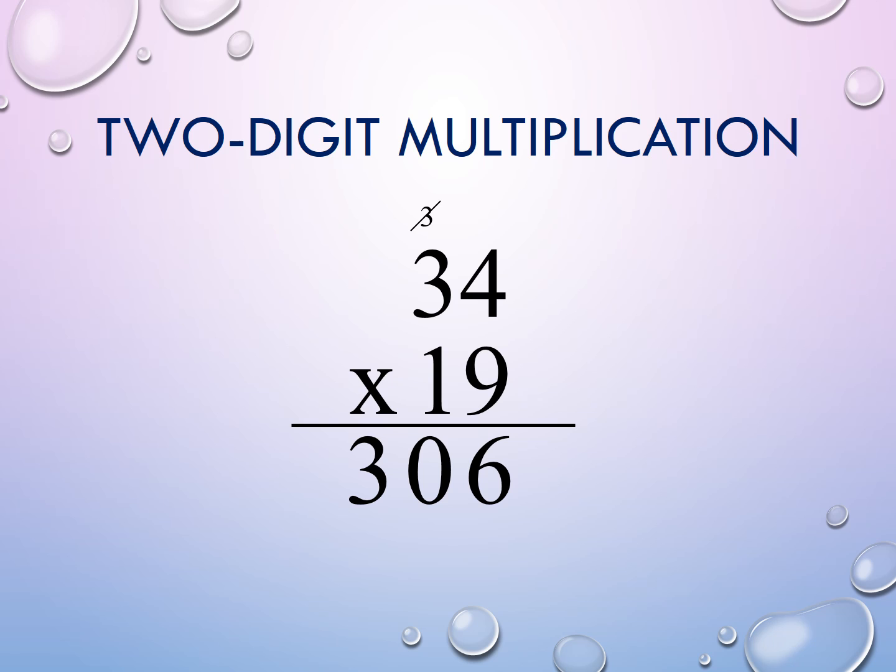Cross out the 3. Add the magic 0. Now we're going to move on to the 10's place. For the 1, 1 times 4 equals 4. And we multiply, 1 times 3 equals 3.